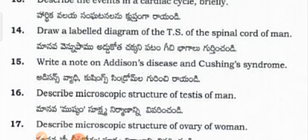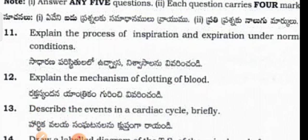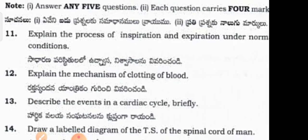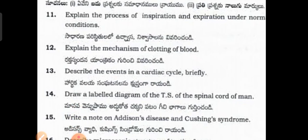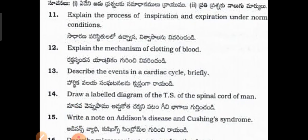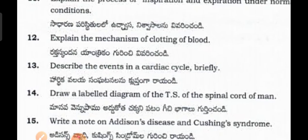Next, we are moving on to section B questions. Explain the process of inspiration and expiration under normal conditions. Explain the mechanism of clotting of blood. Describe the events in the cardiac cycle briefly.